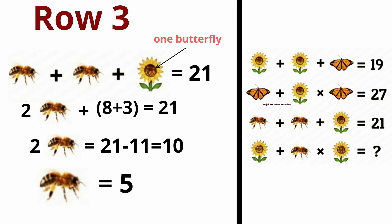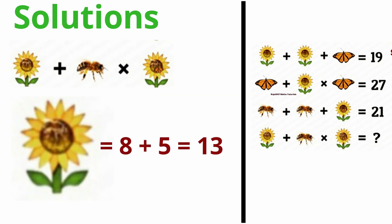In third row, we will focus on two times bee plus sunflower. Then we will focus on one butterfly. The value is 3 equal to 21. Further, we will solve this equation. Two times bee, what will happen? 21 minus 11 equals 10. The value of bee is 5.